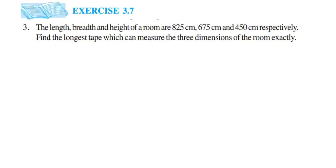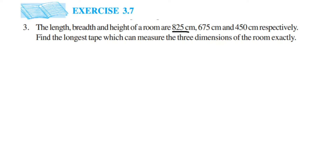Here I am doing exercise 3.7, third question — Playing with Numbers. The question is: the length, breadth, and height of a room are 285 centimeters, 675 centimeters, and 450 centimeters respectively. Find the longest tape which can measure the three dimensions of the room exactly. We have to find the tape which can measure exactly, and we want the longest tape, not the smallest, without any remainder.